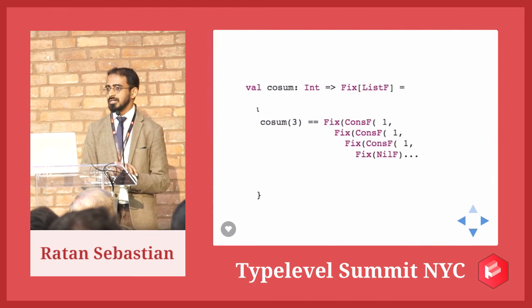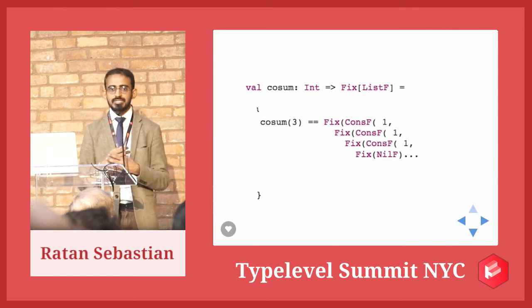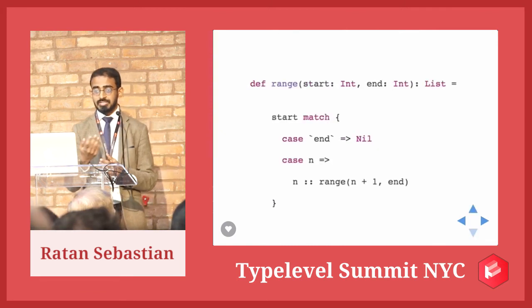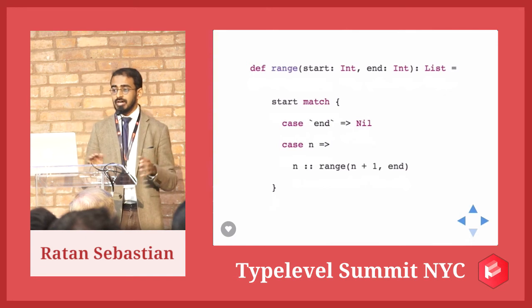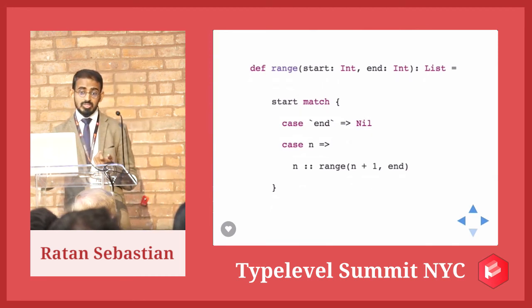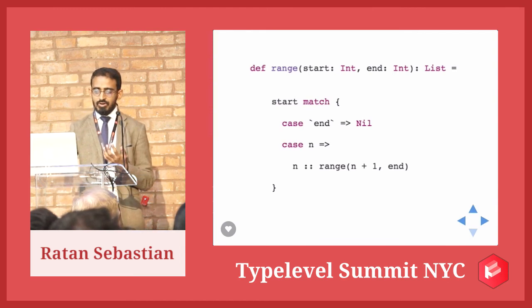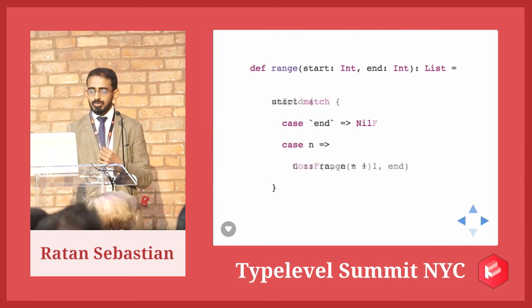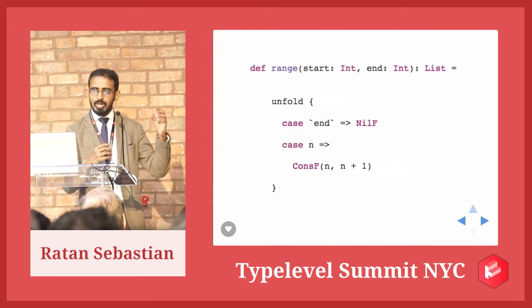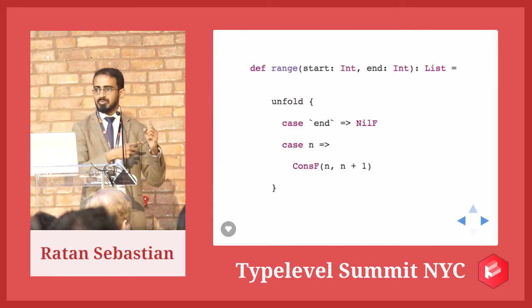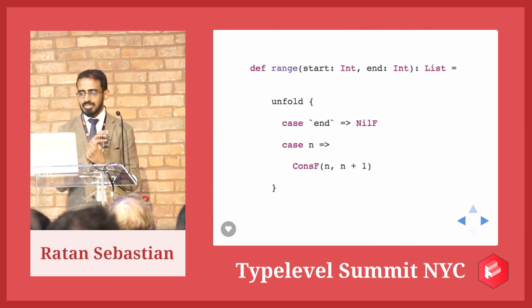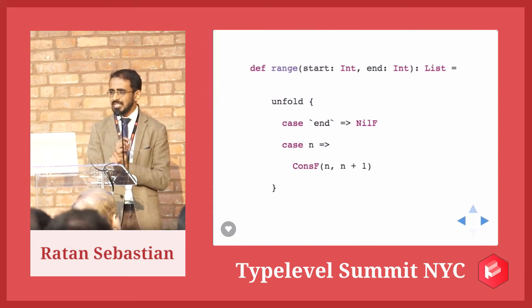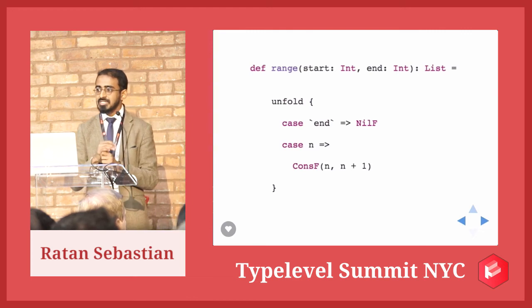A more useful anamorphism would be range — we do this quite often with something like one to ten to list. If implemented using direct recursion, it pattern matches on start: if you've reached the end you're done; otherwise you add the current value onto the result of generating a range with N plus one. If you implemented this with unfold it would look very similar — instead of nil you return NilF, and instead of calling range explicitly you return a ConsF providing N as the emitted value and N plus one as the seed for the next iteration. The Stream in the Scala standard library has an unfold method that basically operates like this.